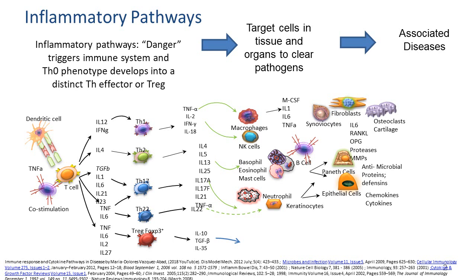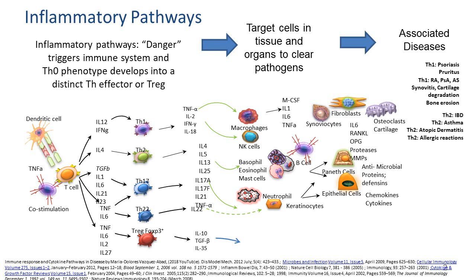Starting with TH1, this particular phenotype is very well characterized as an inflammatory response. It is a response to danger — the response we typically have when we get a sunburn, a cut, or are dealing with most pathogens and bacteria. This profile is characterized by the phenotypic specialization of the T helper cells into TH1, and it causes a very inflammatory response. The TH2 is a response very characteristic of allergies and allergic responses, and this is the way the body deals with different kinds of allergens.